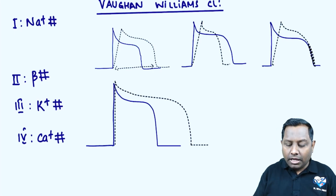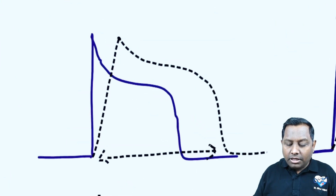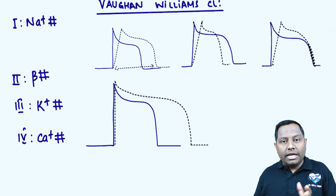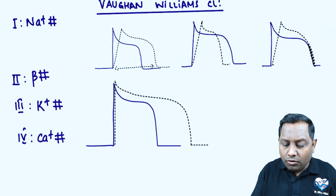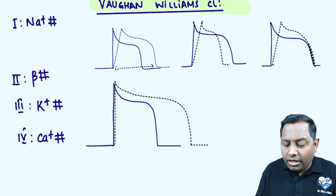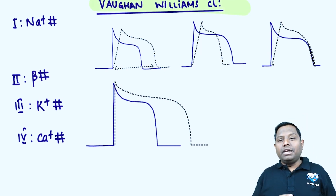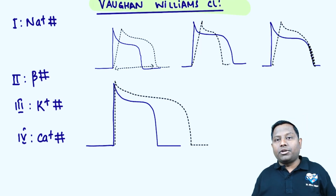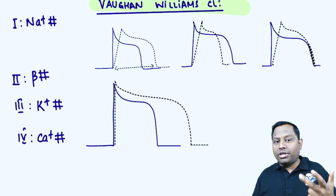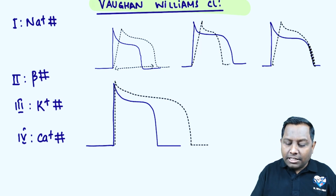Now we look at Class 1 anti-arrhythmic drugs. All anti-arrhythmic drugs are classified by the Vaughan-Williams classification. A useful mnemonic: Class 1 sodium blocker, Class 2 beta blocker, Class 3 potassium channel blocker, Class 4 calcium channel blocker — 'soda blocks potassium channel.'